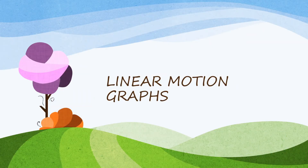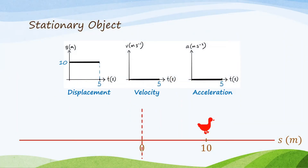Now let's talk about linear motion graphs. There are three types: the displacement-time graph, velocity-time graph, and acceleration-time graph. For a stationary object, the displacement graph is constant, velocity is zero because it's not moving, and acceleration is also zero. For example, this duck has a displacement of positive 10 meters, which is constant, meaning the duck is 10 meters in front of the origin and is stationary — not moving. Velocity is zero.